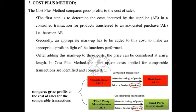The third method is the Cost Plus method. The Cost Plus method compares gross profit to the cost of sales. The first step is to determine the cost incurred by the supplier in the controlled transaction for the products transferred to an associated purchaser. Secondly, a markup is added to the cost to make an appropriate profit in the light of the functions performed. After adding this markup to the cost, a price can be considered as the arm length price.